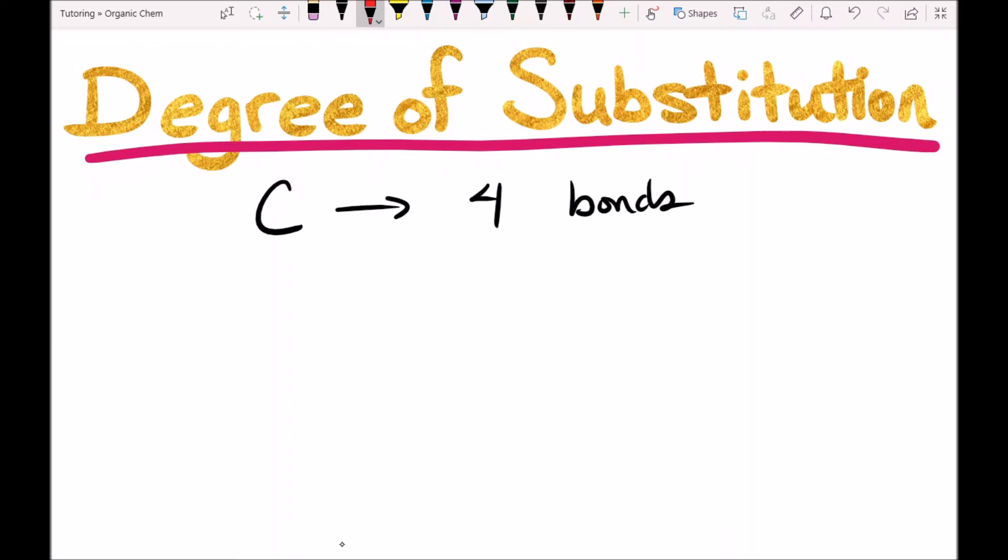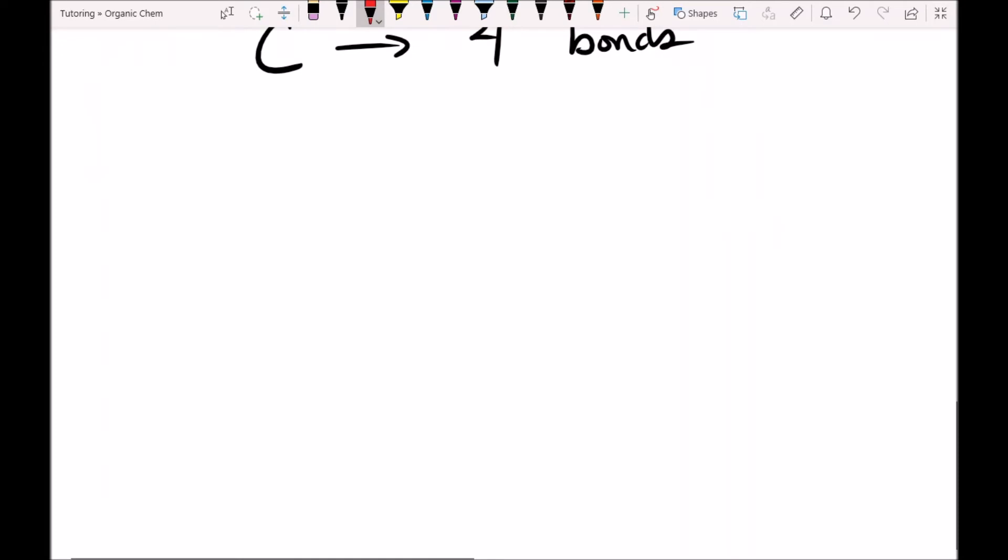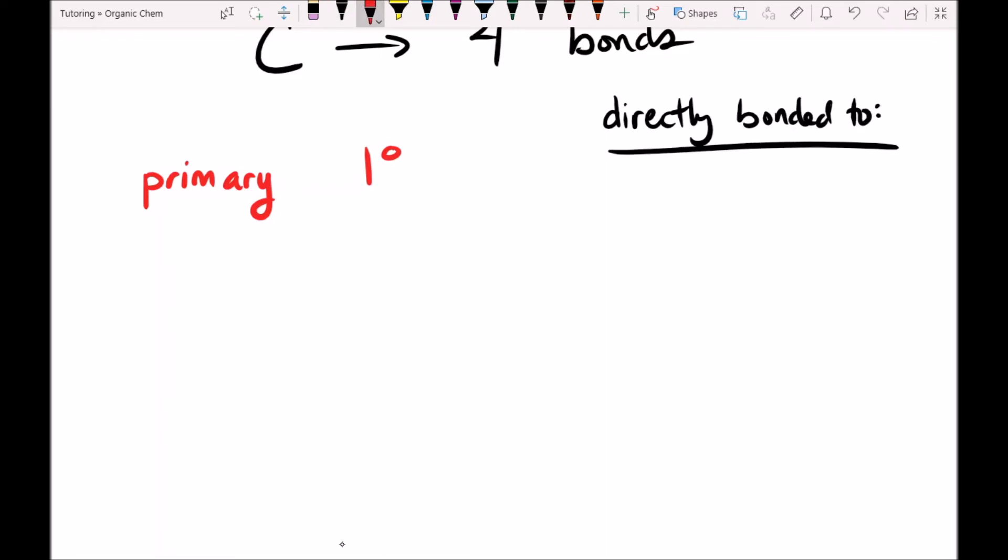So we're going to make a little table here. And so first we have primary carbons. And a 1° with a little degree symbol means primary carbon. And primary carbons are directly bonded to one other carbon atom.